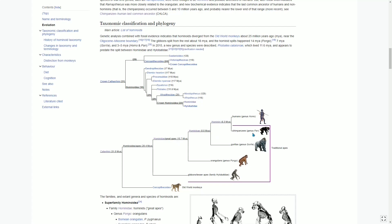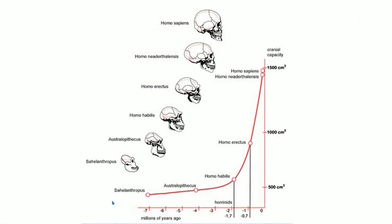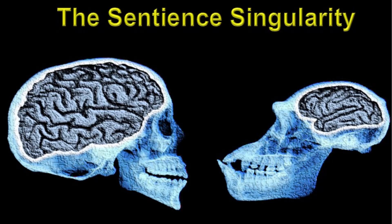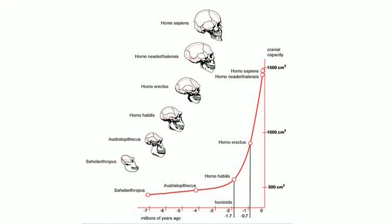That brings us to the chart where chimpanzees split away from humans. Chimpanzees stayed at about the same brain size while proto-humans continued to evolve, and human brain size began to triple. This is huge — this is what is called a sentience singularity, because life on Earth achieved sentience: an intelligent species. I describe this as a singularity that occurred in the past, somewhat analogous to ones we will experience in the future.